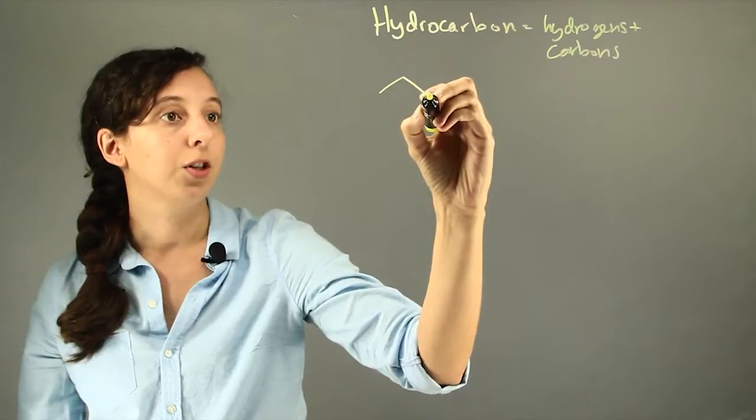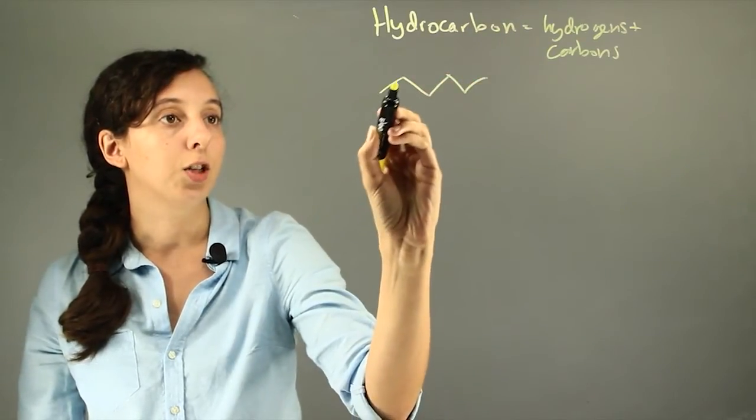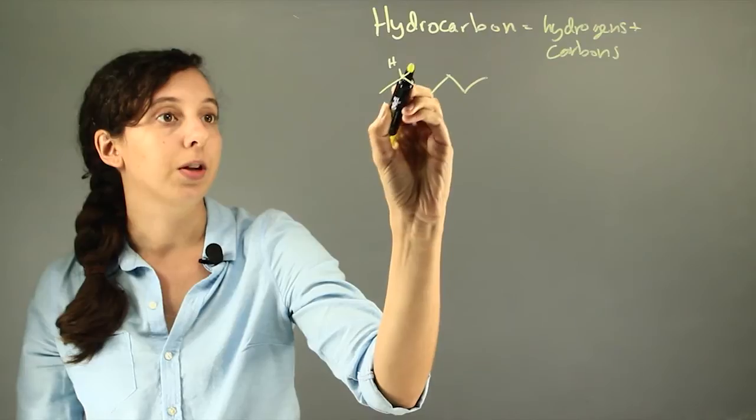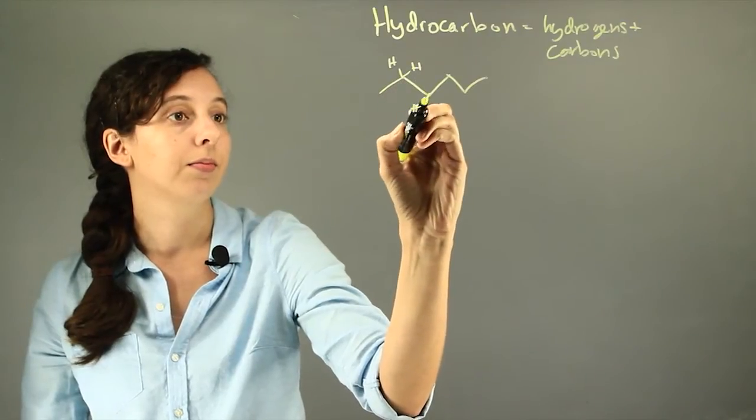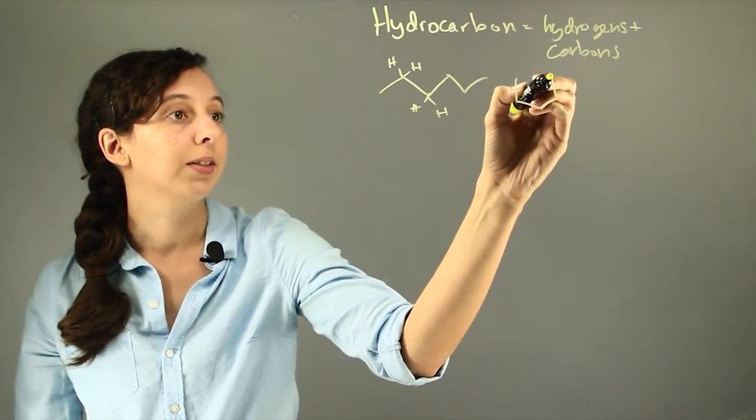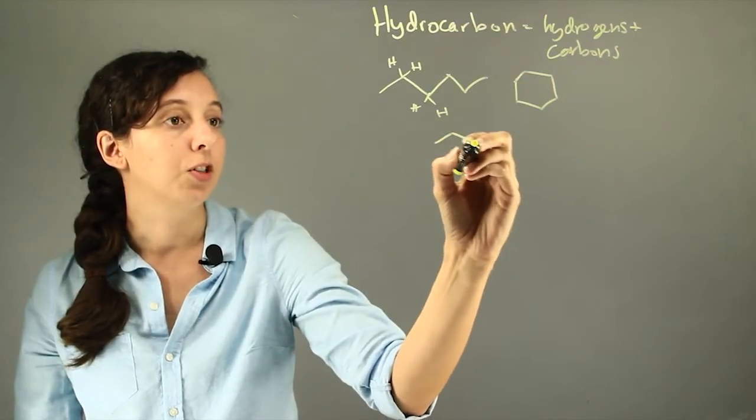So they look like this when you draw a mountain stick form, where you have a carbon at each point, and little hydrogens I'm not drawing hidden here. And they can be simple or complex, and they come in a bunch of different shapes.